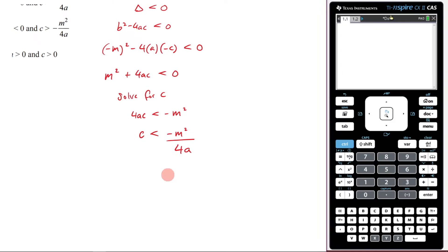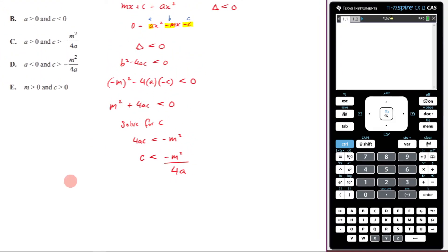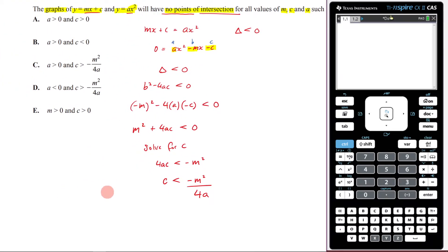And then I'm going to go c is less than negative m squared over 4a. And then we're going to see if this is an option that is given to us. And as you can see, it isn't. We have c is greater than this value here, but we've got less than. So then the question is, well, how could we make it greater than, and how does the a value really relate to it?